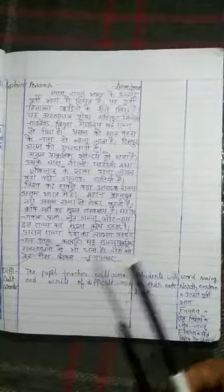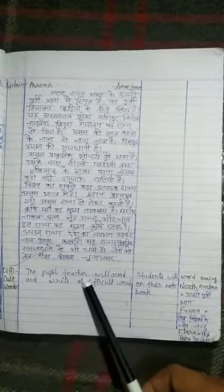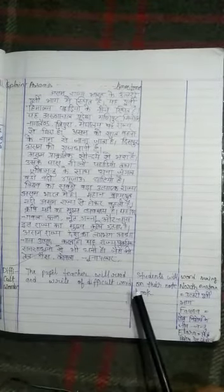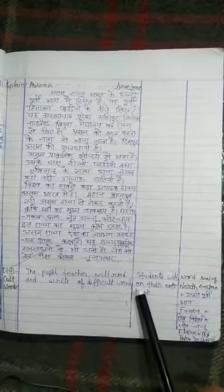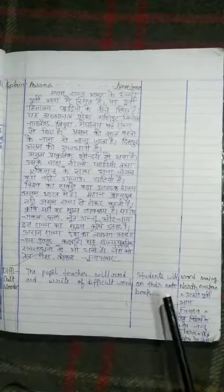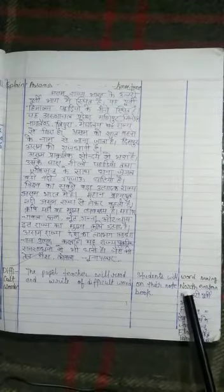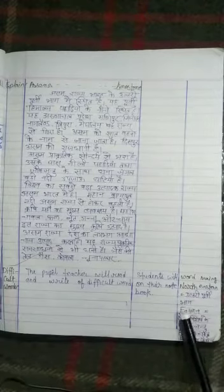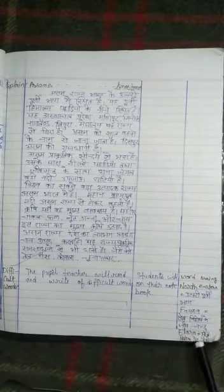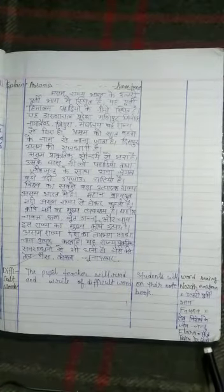And next, headline we write here, difficult words. We write here, the pupil teacher will read and write difficult words. Next to it, students will write in their notebook. And next, word meaning. Northeastern, Uttarpurvi. Flora, animals. Fauna, plants.